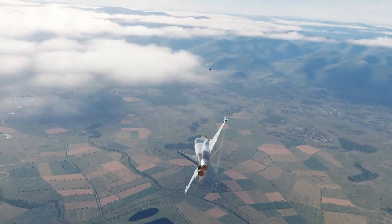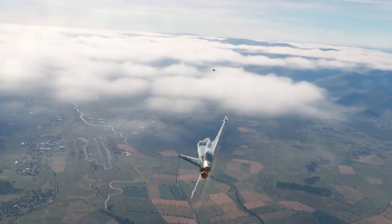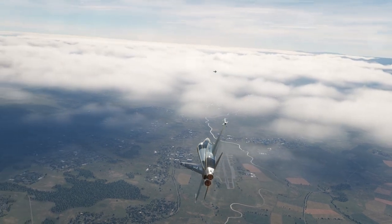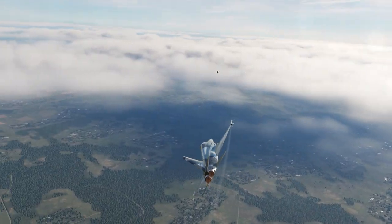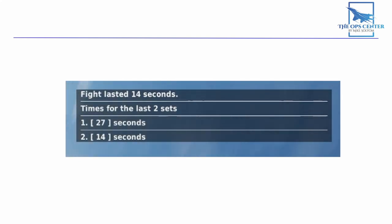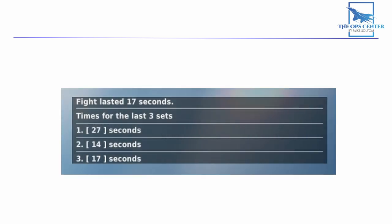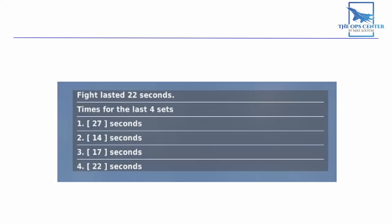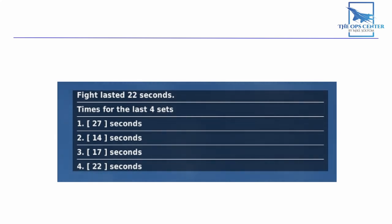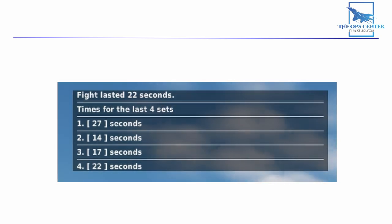Once you've shot down the bandit, you'll get another message telling you how long it took from the VID to the kill. This is to help you measure your progress. Over time, you'll improve at ACM with more experience, and this number should go down. After you've done at least two sets, the message will show a list of all previous times. That way, you can keep track of your progress more easily. Remember, our goal is to consistently get kills under 30 seconds. That way, we minimize the amount of time the bandit has to bring in reinforcements.